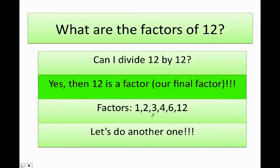As you can see here, if I multiply 4 times 3, I'm going to get 12. Or if I multiply 6 times 2, I'm going to get 12. 12 times 1, I'm going to get 12. So the combination of some of these numbers will always give me 12. Let's go ahead and do another one.